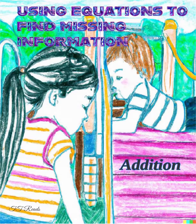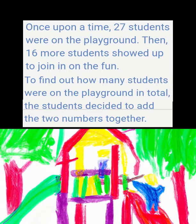Using equations to find missing information. Once upon a time, 27 students were on the playground.